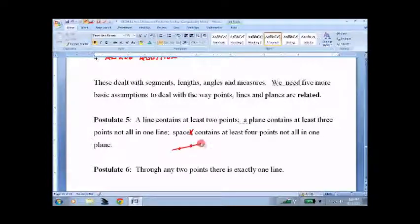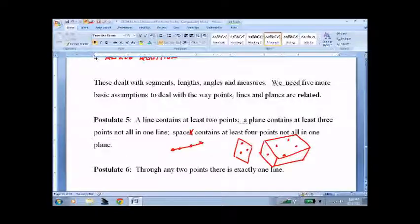A line has to have at least two points. Three points not lined up make a plane. Then three points. Four points, not all in the same plane. One here, one here, two up there, make space.